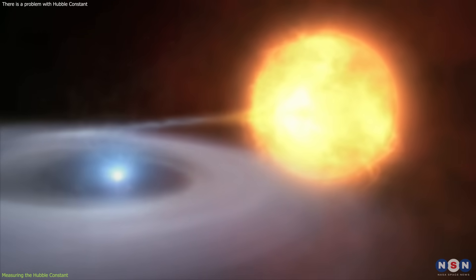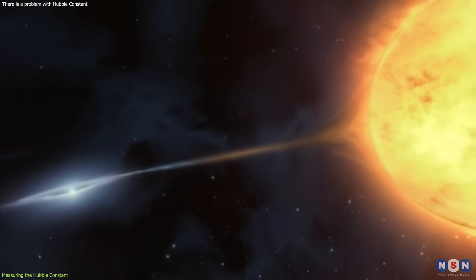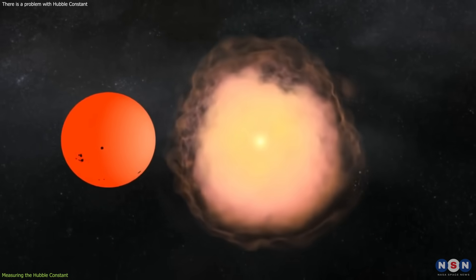Another type of standard candle are type 1A supernovas, which are the explosions of white dwarf stars that have a similar brightness. By measuring the apparent brightness of a supernova, we can also calculate its distance.